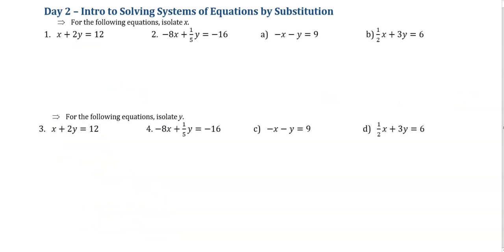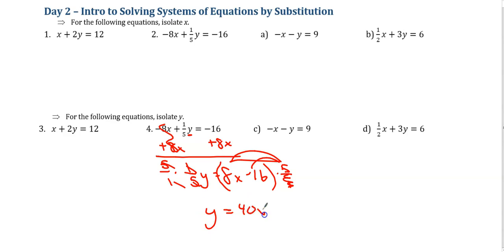Number four, this is just an ugly problem altogether. But if I'm trying to get y by itself, I'm going to add 8x. 1/5 y equals 8x minus 16. I got to multiply by 5 over 1. Remember, that means I got to multiply everybody over here by 5 over 1. Distribute. And y equals 40x minus 80. So getting y by itself was probably a little bit easier than getting x by itself in this problem.